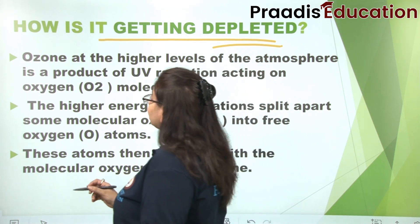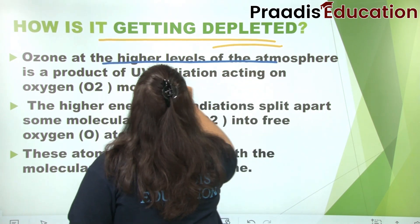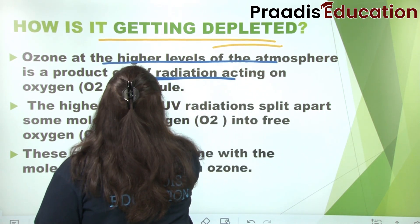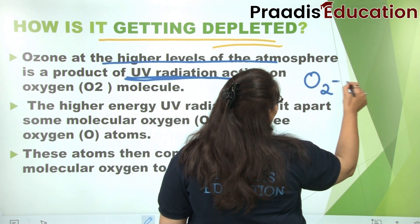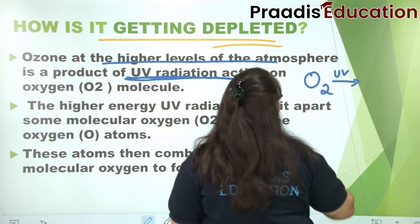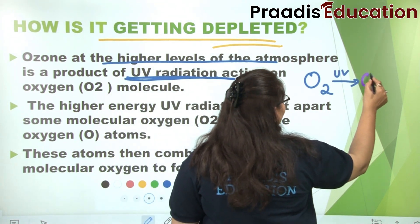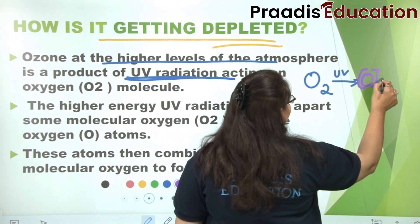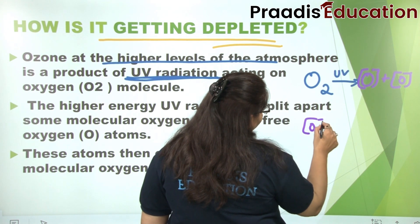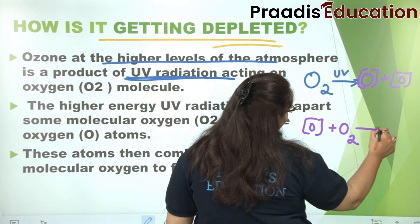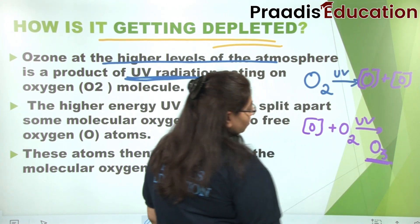Now let me tell you about ozone formation at higher levels. When oxygen is at the top and UV radiation acts on it, the O2 molecule can split into two nascent oxygen atoms. Then one nascent oxygen reacts with another molecule of oxygen and converts into O3 — that is, ozone.